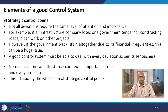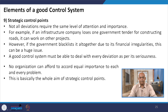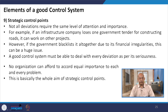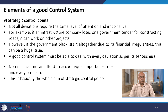Regarding strategic control points, not all deviations require the same level of attention and importance. For example, if an infrastructure company loses one government tender for constructing roads, it can work on other projects. However, if the government blacklists it altogether due to financial irregularities, this can be a huge issue. No organization can afford to give equal importance to each and every problem.